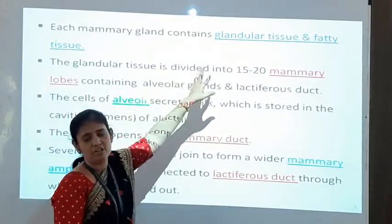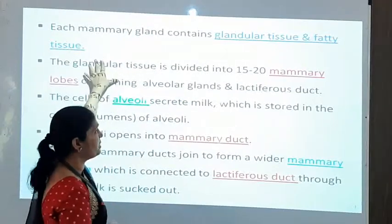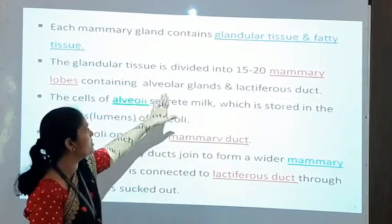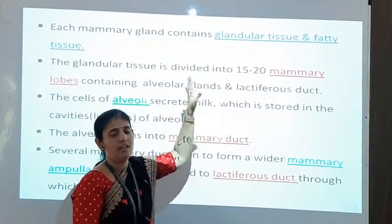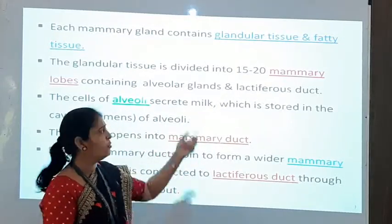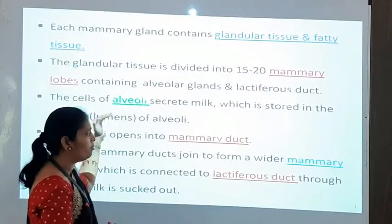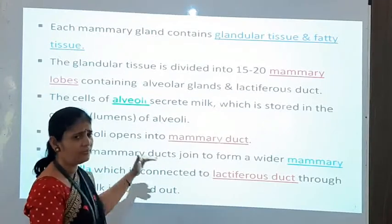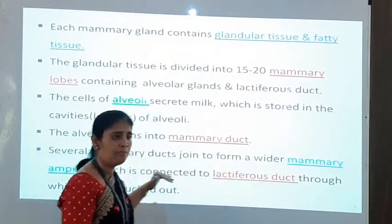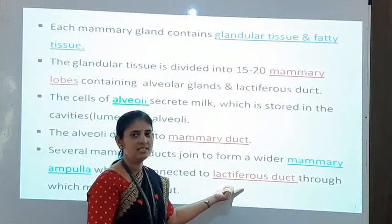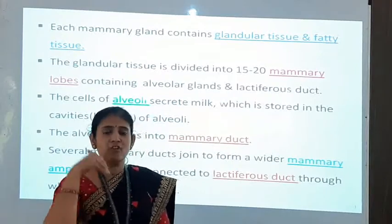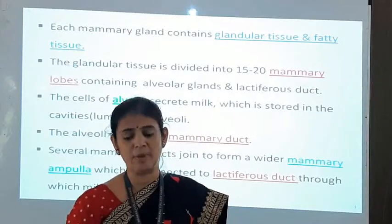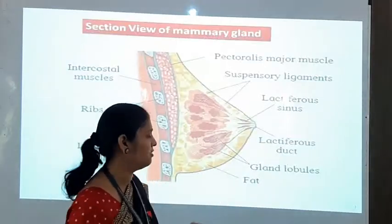The mammary gland consists of glandular tissue and fatty tissue. The glandular tissue is made up of 15 to 20 mammary lobes consisting of alveolar glands and lactiferous ducts. Lactiferous ducts secrete milk which is stored in the alveoli. From alveoli, milk is collected into the mammary duct, from mammary duct to mammary ampulla, and from mammary ampulla the milk is released into the lactiferous duct and then outside.